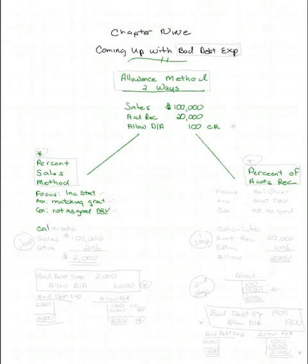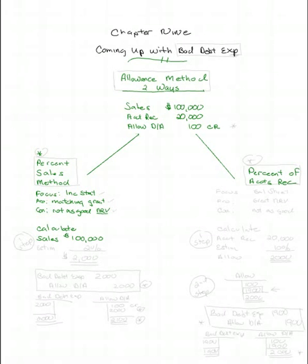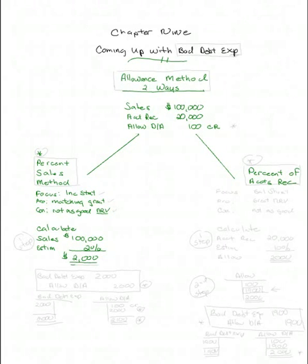Let's calculate the bad debt entry under the Percent of Sales Method. In our example, we have sales of $100,000. Let's assume that we think our bad debt estimate is that in the end, 2% of this amount will go bad. 2% of these sales equals $2,000. In one step, we've calculated what we want bad debt expense to be.